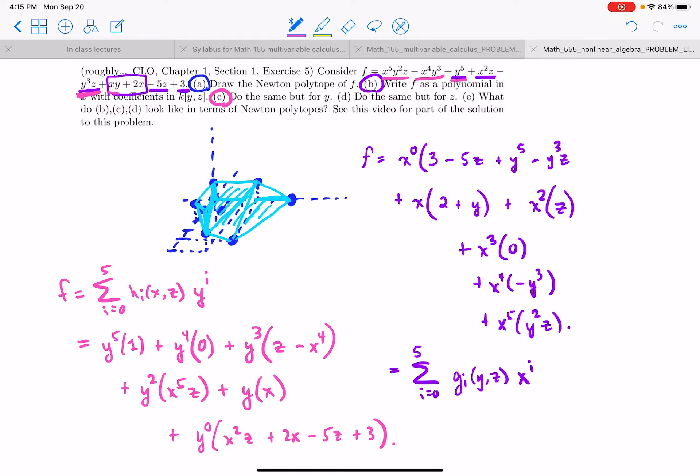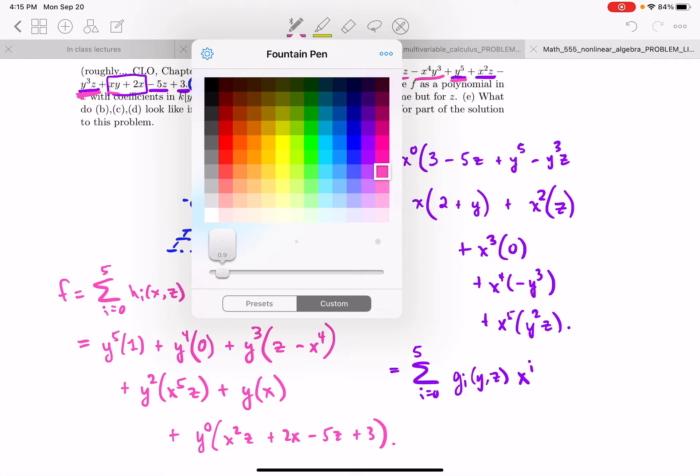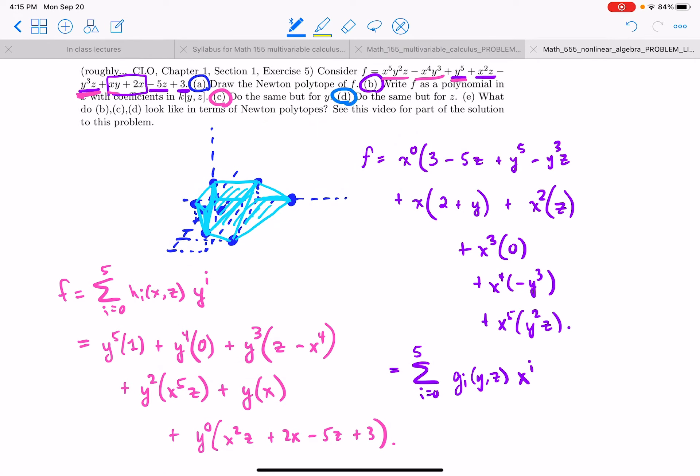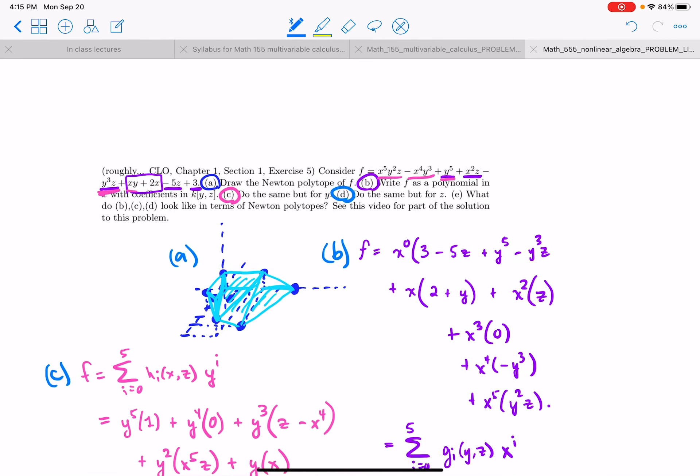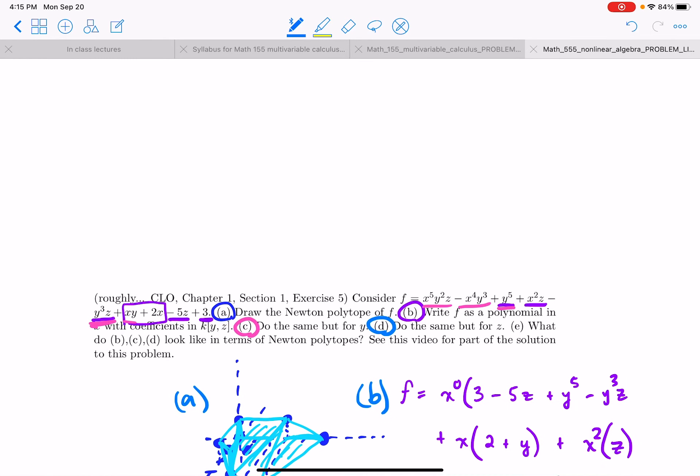Okay. Now we can collect in terms of part d. So let's label this a, b, c. And now part d is to collect in terms of the powers of z. So let's do that up here so I can still see the polynomial.